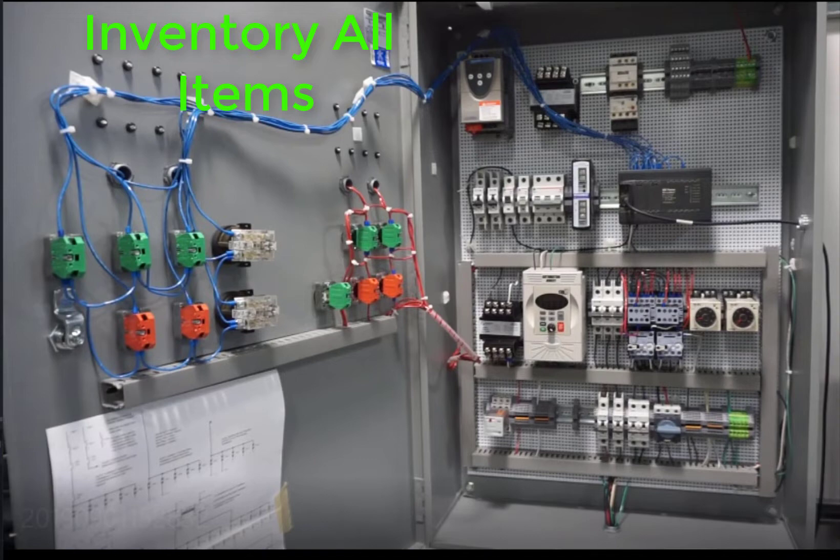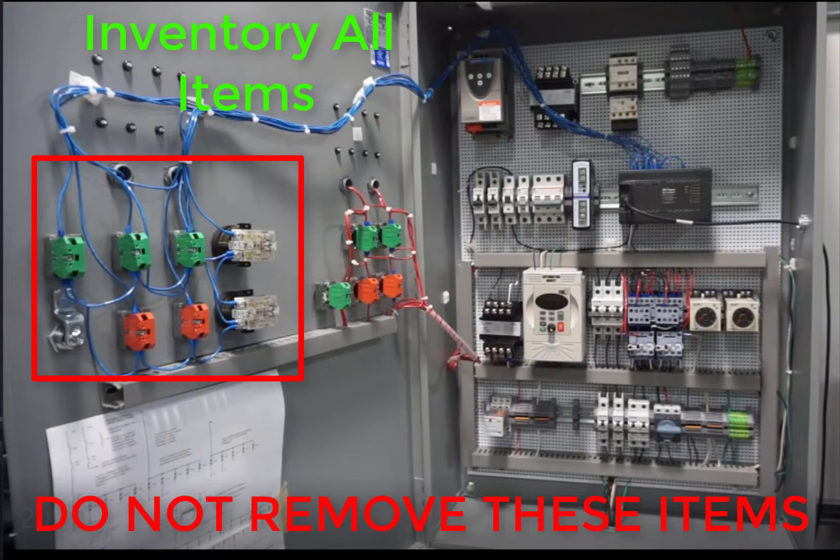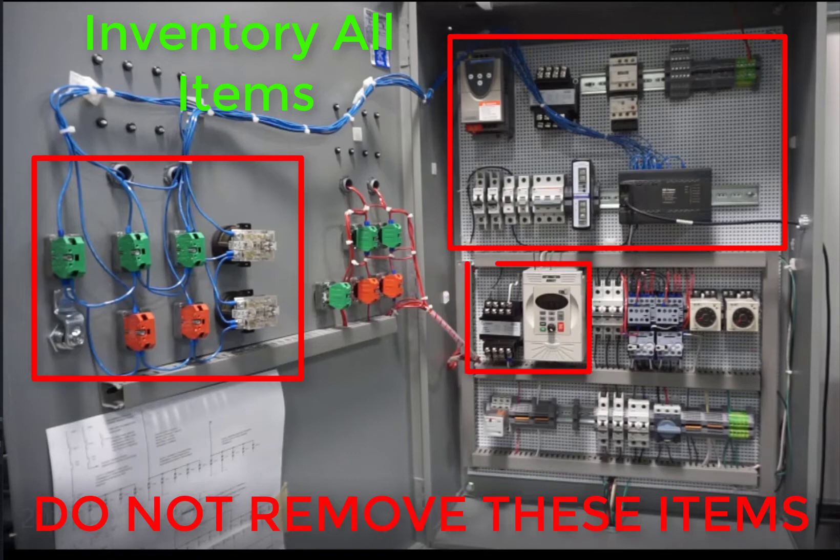Inside, you're going to inventory everything. You won't be removing everything but you will be inventorying everything. Do not remove the items in red, which are all the PLC areas, the transformer and variable speed drive, and the power entry down in the lower right.